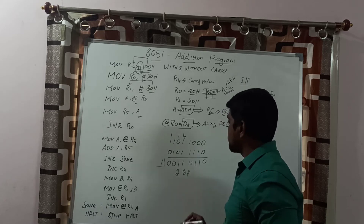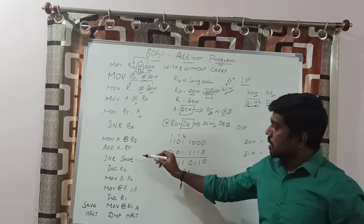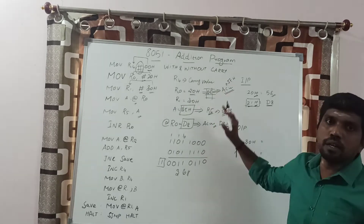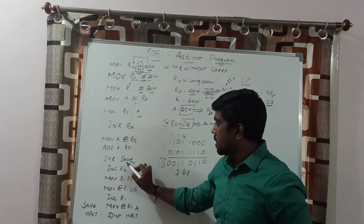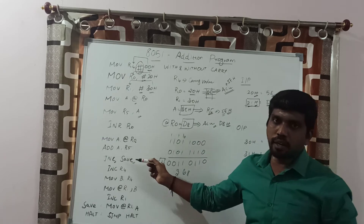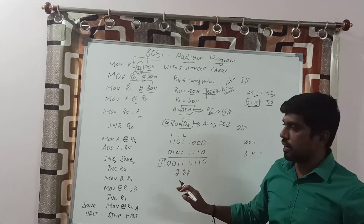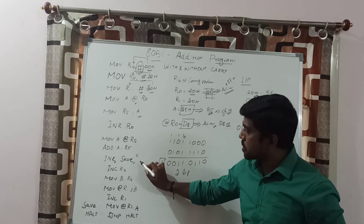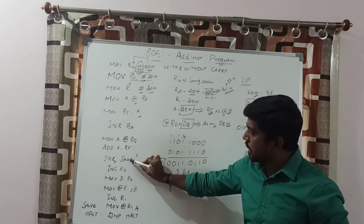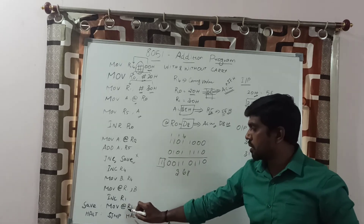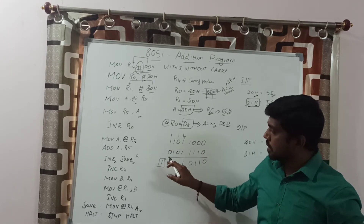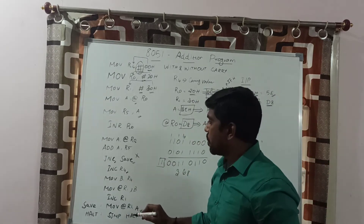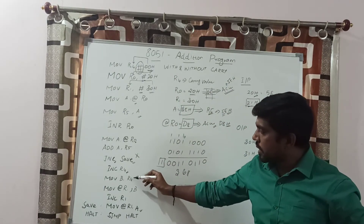After addition you get the result 36H with carry value 1. Next, check whether the output produced a carry or no carry. The instruction JNC — jump on no carry — is used. But in this program, the addition produces a carry, so JNC is a false condition and the jump does not execute. If there were no carry, the instruction would be true and the program counter would jump directly to MOV @R1, A. Since carry is produced, the next instruction executes instead.